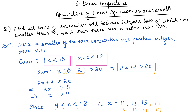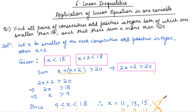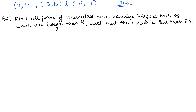Now we find x plus 2 for each value of x: for x=11, x+2=13; for x=13, x+2=15; for x=15, x+2=17; for x=17, x+2=19. Now check: 11 and 13 both satisfy being less than 18. 13 and 15 also satisfy. 15 and 17 also satisfy. But for x=17, x+2=19, which is not less than 18. So the pairs satisfying all conditions are (11,13), (13,15), and (15,17).